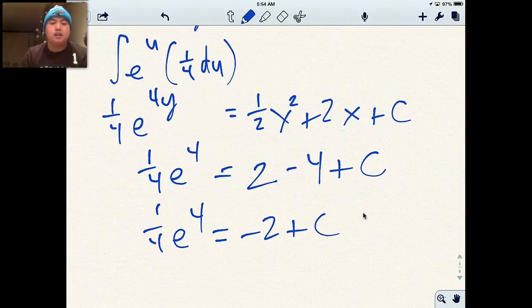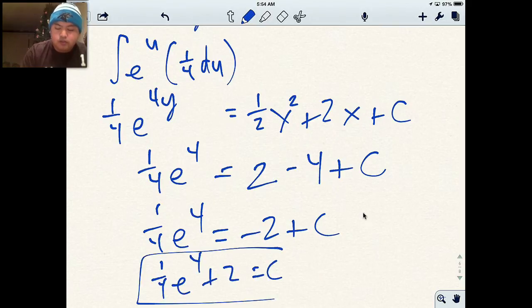I want to get c by itself. So my answer is going to be 1 fourth e to the 4 plus 2 equals c. So hopefully you understand how to solve differential equations because we talked about it before. All we do is now add ln and e to that mix so that you know what to do in case you see a problem like that on the AP test. So I hope you enjoyed the video. If you have any questions, feel free to ask it. And I'll see you all later.